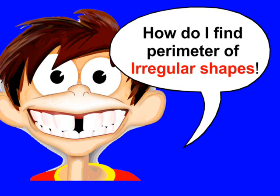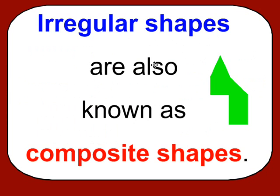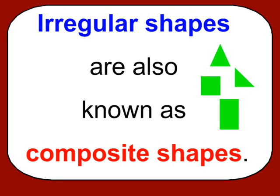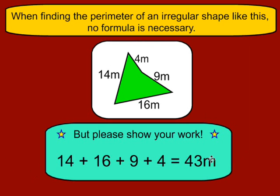Well, how do you find the perimeter of irregular shapes? Irregular shapes are also known as composite shapes, and they're known as composite shapes because a lot of times they're made up of many different polygons, many different shapes. There really is no set formula for irregular shapes — you would just want to show your work. In this example, we would just add up the sides to find the perimeter.